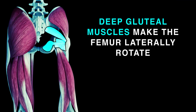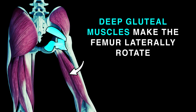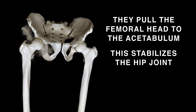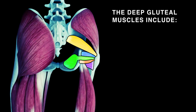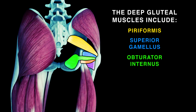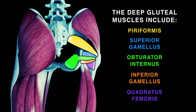Deep gluteal muscles make the femur laterally rotate, pulling the femoral head to the acetabulum so the hip joint is stable. They include piriformis and obturator internus, superior and inferior gameli, and quadratus femoris.